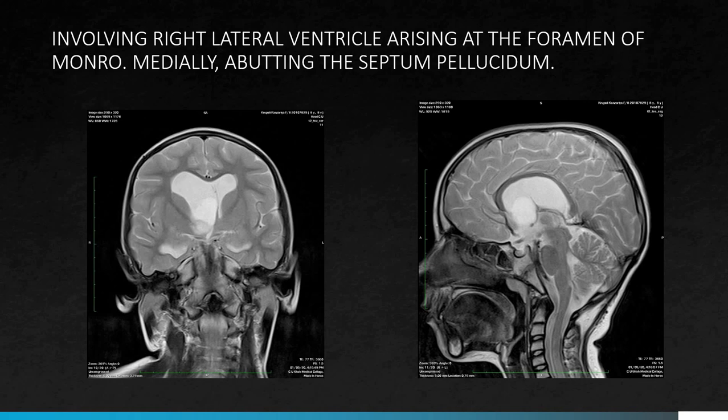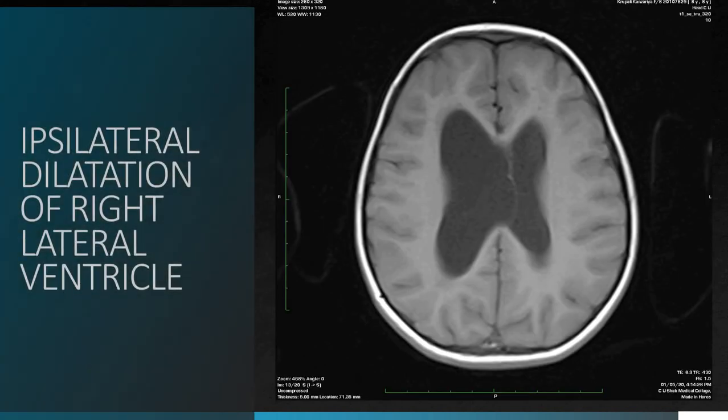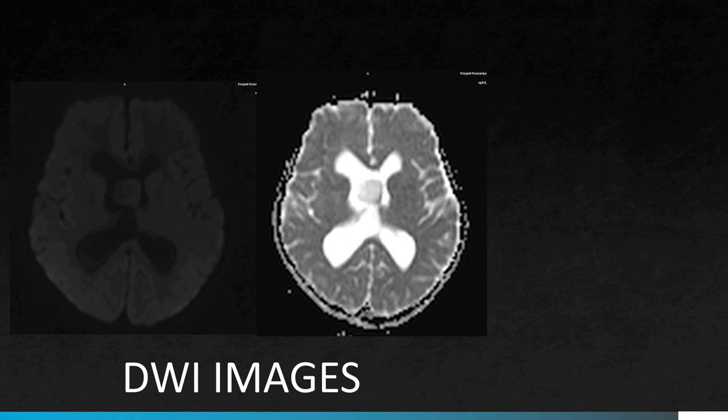Medially, the lesion is abutting the septum pellucidum and the lesion is causing mild obstructive hydrocephalus. There is ipsilateral dilatation of the right lateral ventricle, which is suggestive of the intraventricular location of the lesion.